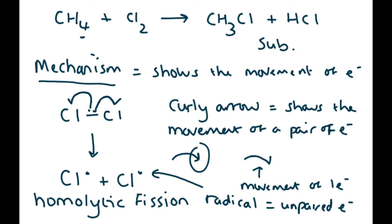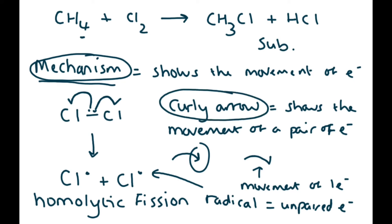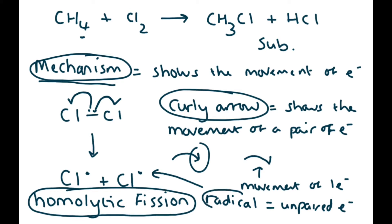The word radical means a species with an unpaired electron. So to recap key words: a curly arrow shows the movement of a pair of electrons; homolytic fission is the way the bond is broken; and a radical is a species with an unpaired electron.